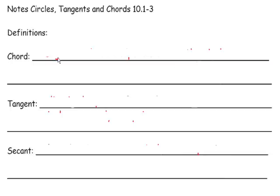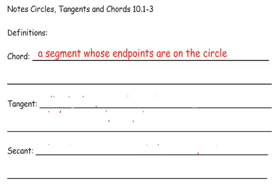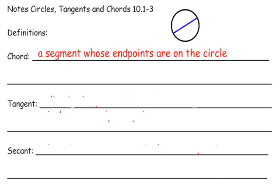The first segment we're going to talk about is a chord. A chord is a segment whose endpoints are on the circle. If I were to draw an example, I've got a circle, and then a line segment where both endpoints are on the circle — so this blue line right here is a chord.